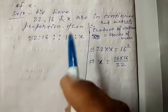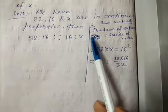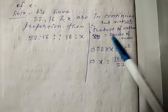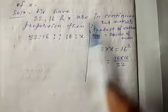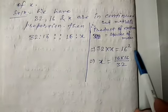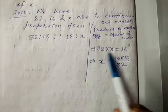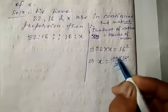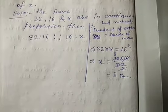जब 3 quantities continued proportional होती हैं, तो एक formula होती है: product of extremes is equal to square of mean। Extreme मतलब शुरू और last का number; mean मतलब बीच वाला number का square। यहां से x = (16 × 16) / 32 = 256 / 32 = 8. तो x का answer 8 है।